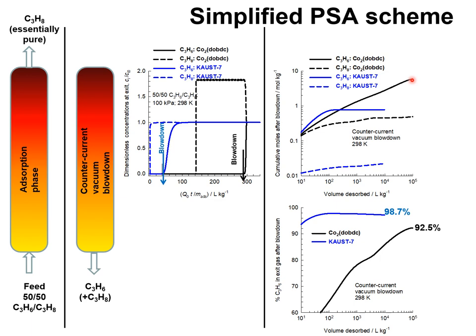With Cobalt MOF-74, a significantly higher amount of propylene is recovered — about five to six moles per kilogram of adsorbent. But concomitantly, a significantly high amount of propane is also recovered in the blowdown phase, because of the significant amounts of propane remaining in the adsorbed phase at the start of blowdown. In sharp contrast, with KAUST-7, the amount of propylene recovered is significantly lower, but so is the propane recovered — about an order of magnitude lower than with Cobalt MOF-74.